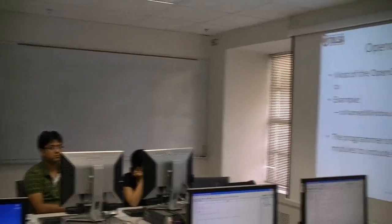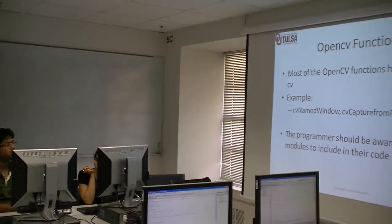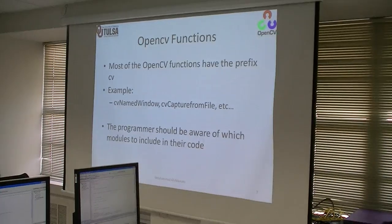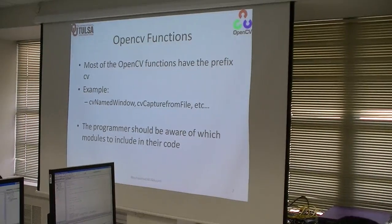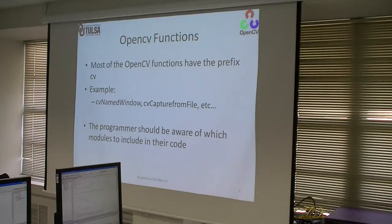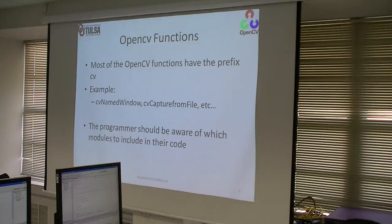Most of the functions, as you will see, start with CV — that's how you know it is an OpenCV computer vision library function. For example, you have cvNamedWindow, cvCaptureFromFile, etc. You need to be aware of which modules you are using in your code, because sometimes you'll need more than others — you might only need the CV edge module, or CX core, or usually the HighGUI when displaying video.